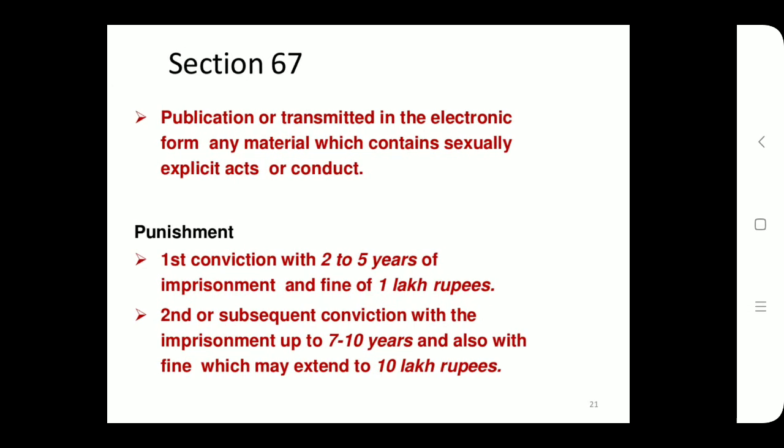Section 67 deals with the publication or transmission in electronic form of any material which contains sexually explicit acts or content. The punishment for the first conviction under Section 67 is two to five years of imprisonment and a fine. For subsequent convictions, the imprisonment is up to seven to ten years along with a fine which may extend to ten lakhs.